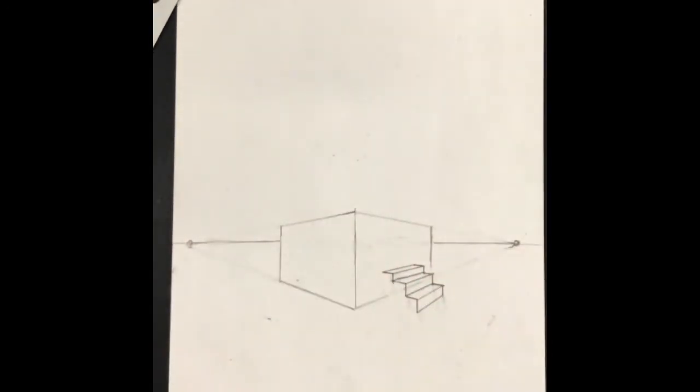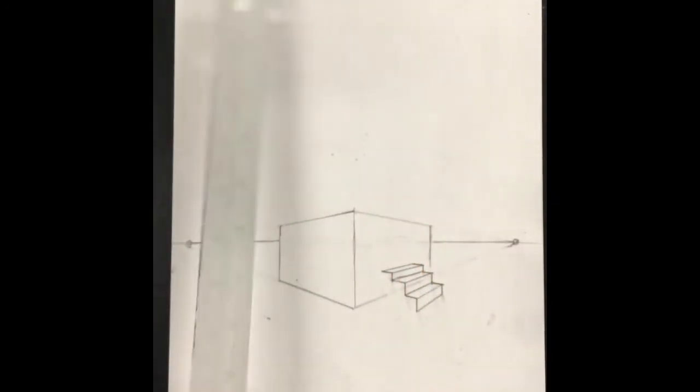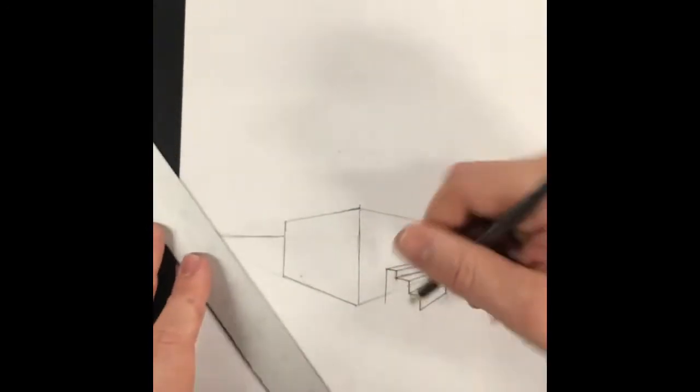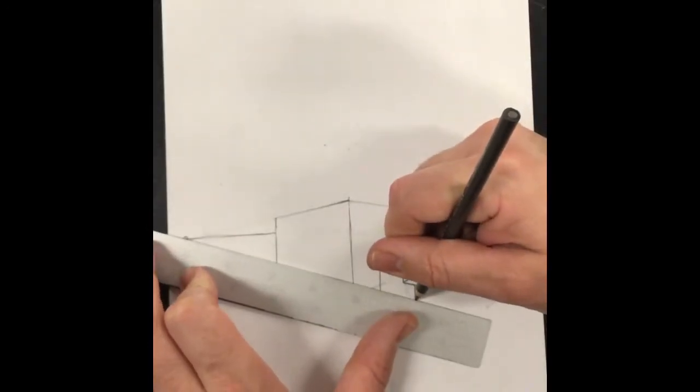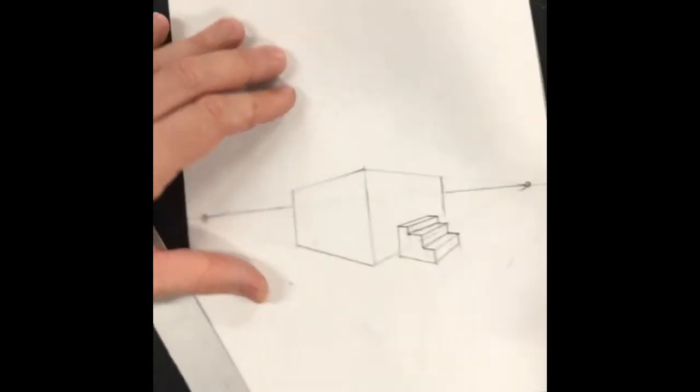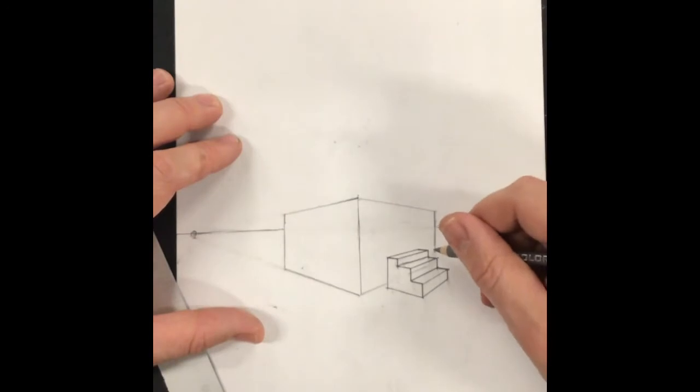But stairs have a side on them, so we need to finish that off. We finish it off like any other box. Vertical line down, go from here back. There's the side of my stairs going up to my building. Pretty simple.